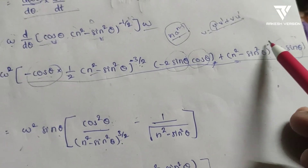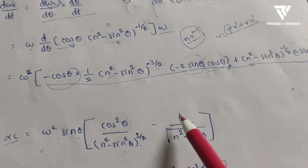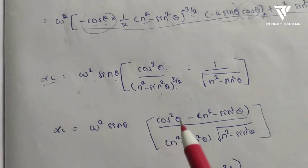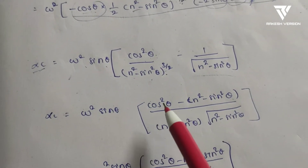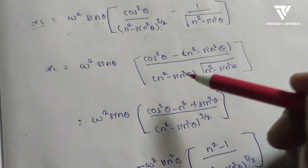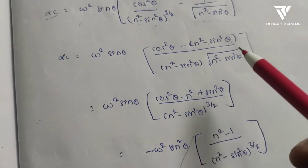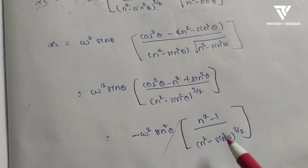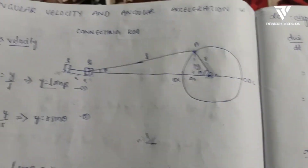Simplifying cos²θ − n² + sin²θ and noting that cos²θ + sin²θ = 1, the minus sign becomes plus and finally we get the angular acceleration of the connecting rod: α_c = −ω²·sin θ·(n² − 1) / (n² − sin²θ)^(3/2).